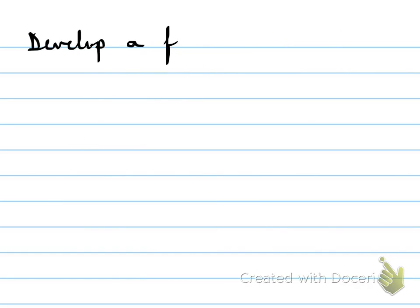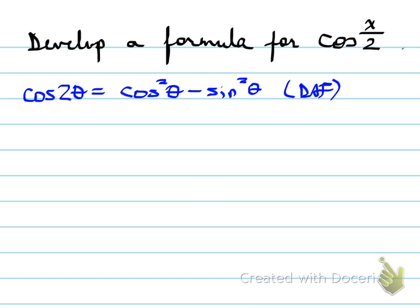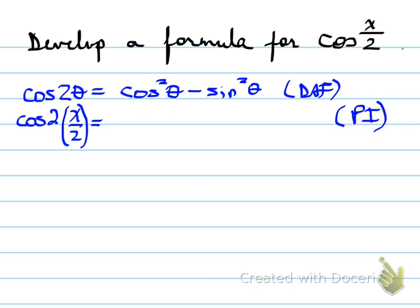Now let's develop a formula for cosine of x over 2. This one is tricky. A lot of students think we can use a half plus a half — that's not necessarily true. Let's look at the following: cos 2θ equals cos² θ minus sin² θ, using the DAF rule. If we let θ equal x over 2, then instead of 2θ we have 2 times x over 2, which gives cos² (x/2) minus sin² (x/2).